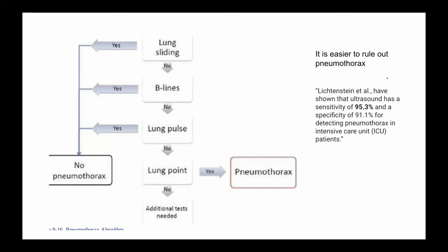Pneumothorax can be diagnosed with ultrasound, but it's easier to rule it out. If lung sliding is present, we know the visceral and parietal pleura are next to each other and there's no air between them — ruling out pneumothorax. B lines originating from the pleural line can also rule out pneumothorax. If the patient is apneic and you cannot detect the shimmering artifact at the pleural line, but you see a lung pulse — repetitive cardiac movements transmitted to the pleural line in synchrony with the pulse — then the visceral and parietal pleura are opposed and you can rule out pneumothorax.